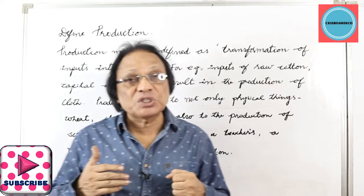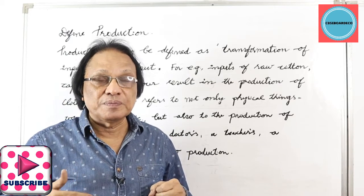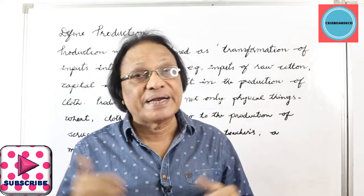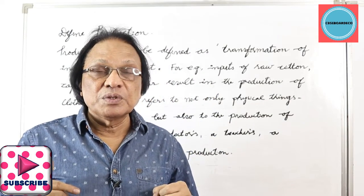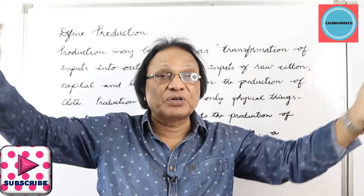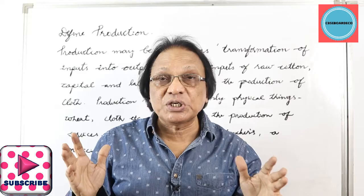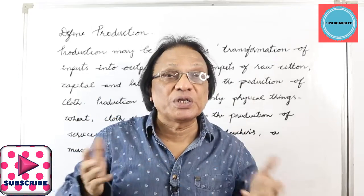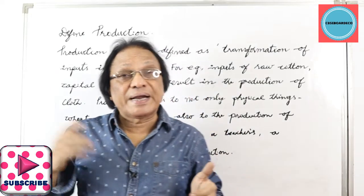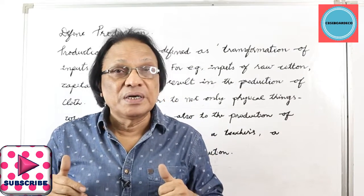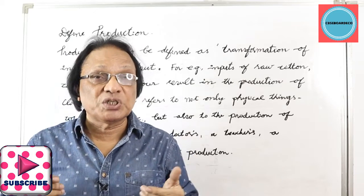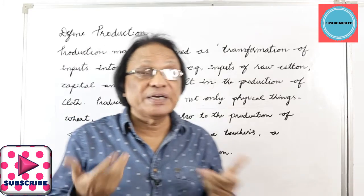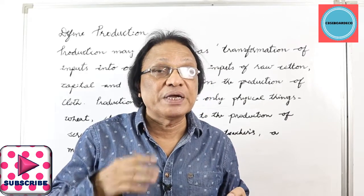In this unit, the first topic and the first chapter is production — what exactly is production? Production in economics is a very broader term. Production means transformation of inputs into output. For example, transforming sugarcane into sugar is production, transforming wood into furniture is production, and transforming cloth into clothes is production.